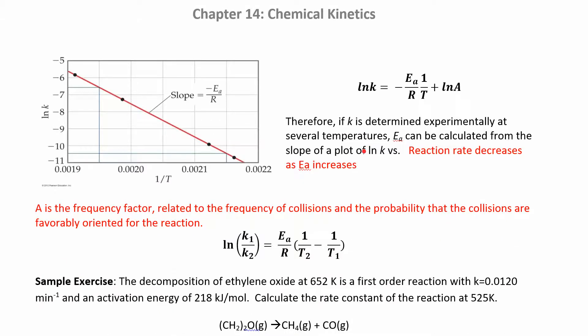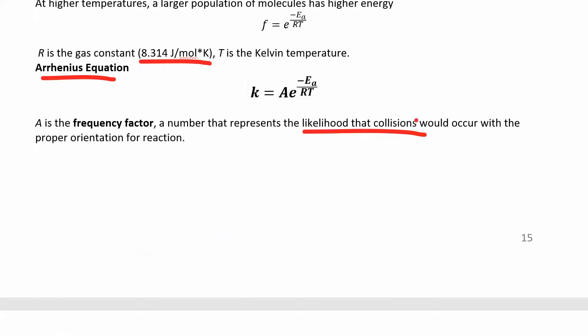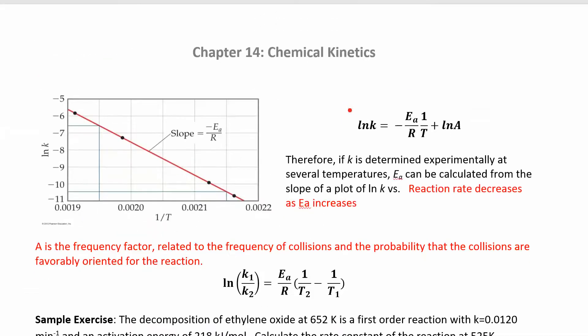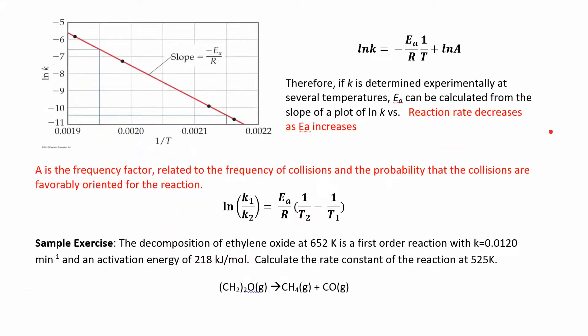You can rearrange that equation. Take the natural log of both sides to get rid of your exponent. And you end up with this equation. It's the same one, just rearranged. And I like this one better because it's a linear equation. So you get Y equals MX plus B. You're going to plot natural log of k, that's your Y axis, and one over temperature, that's your X axis. Make sure your temperature's in Kelvin. Temperature in Kelvin. It's not going to work in Celsius.